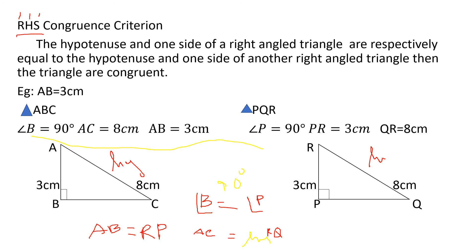One more rule, ASA congruence triangle, we will be learning in the next class. Let's recall today's topics: congruence of line segments, congruence of angles, congruence of triangles, and different types of congruence rules - SSS (all three sides equal), SAS (two sides and one angle equal), RHS (right angle, hypotenuse, and side), and ASA (to be learned next class). Based on these definitions and rules I will give some homework problems. Thank you, have a nice day. Please read your textbook, watch your YouTube classes, write your notes regularly, and do your homework.